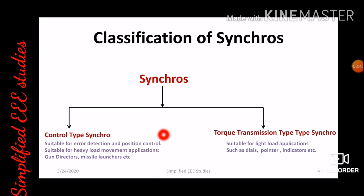In control type synchro, there are two main components: first one is synchro transmitter and second one is control transformer. Considering torque transmission type synchro, it is mainly used for light load applications. Examples include dials, pointers, and indicators. These are the basic applications of torque transmission type synchro.